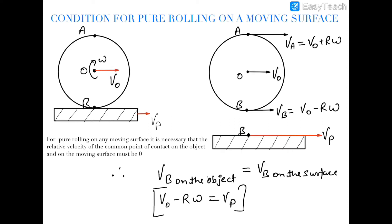The relative velocity of the point of contact on both the body and the surface must be zero. Using this condition, the velocity of point A would be v-naught plus r·omega, because the center is already moving with velocity v-naught and the object is rotating about the center with angular velocity omega. The velocity of point B would be v-naught minus r·omega, because v-naught is in the forward direction while r·omega is in the reverse direction for point B.